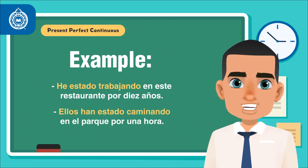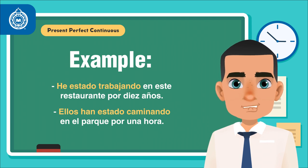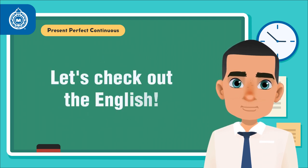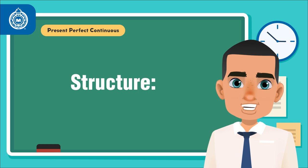Now that you have seen how to form the present perfect continuous in Spanish, let's check out the English. The structure is as follows.